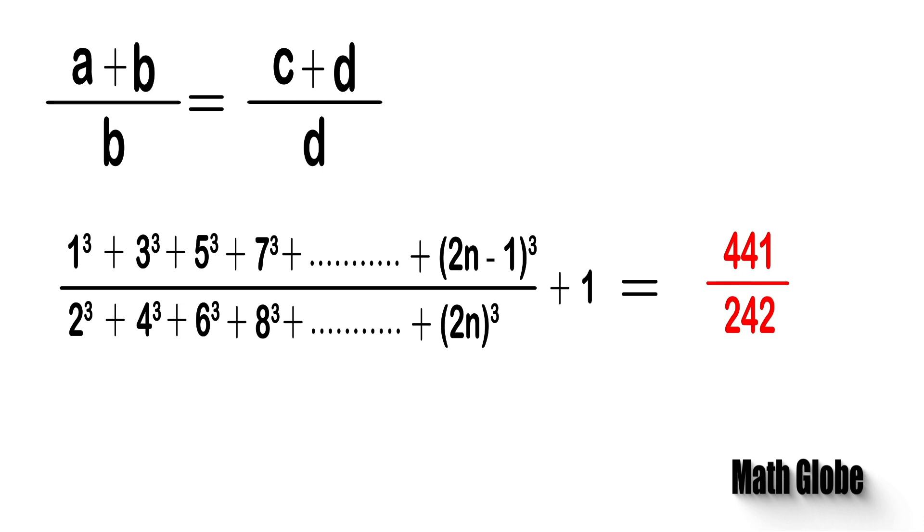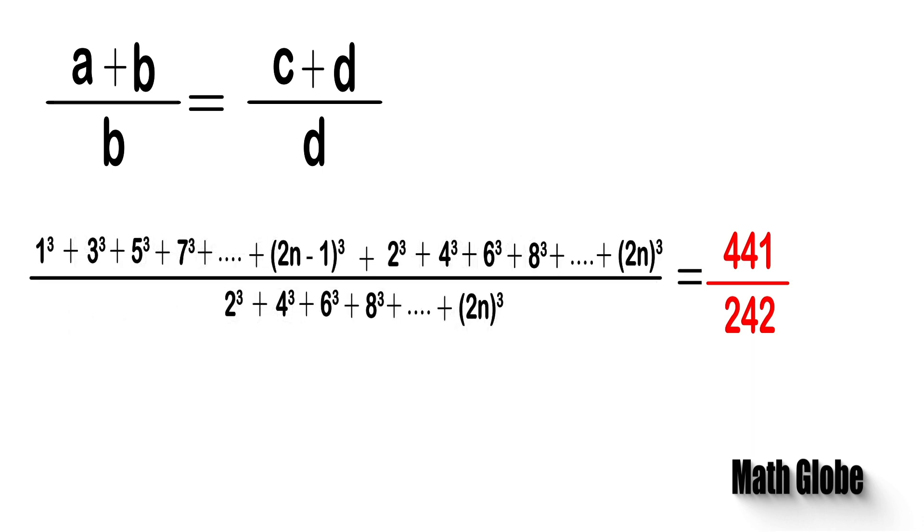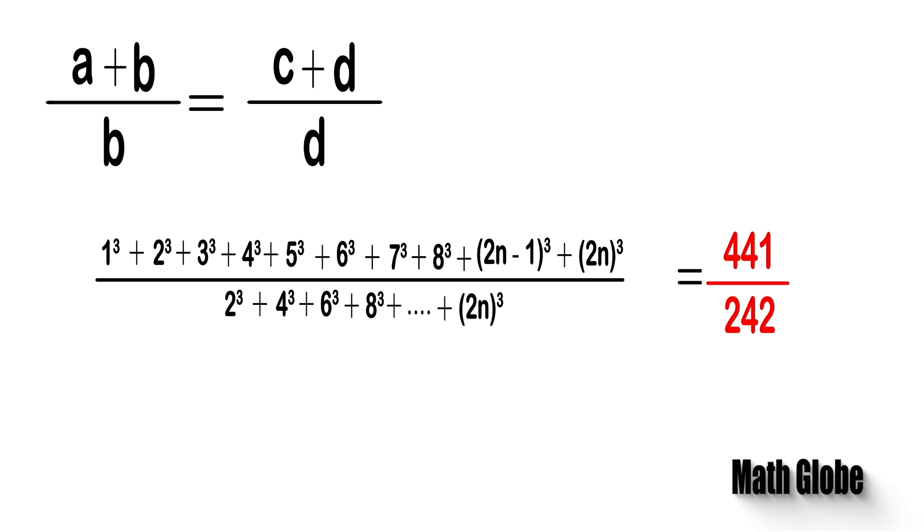Likewise, if we do the same thing for the left-hand side of the equation, we will have the following fraction. If we then take 2 as a common factor in the denominator, we will have the sum of the sequence of cubes.